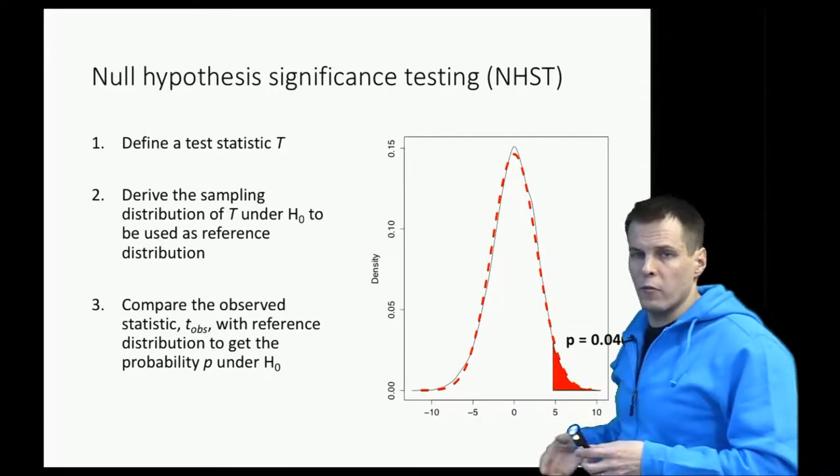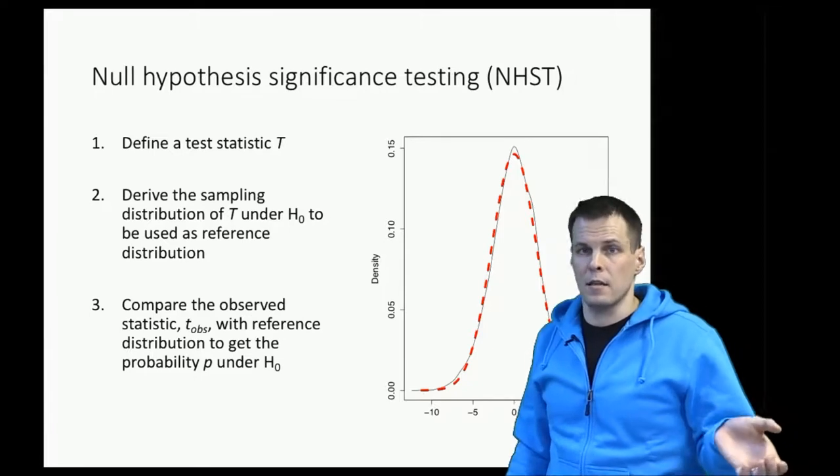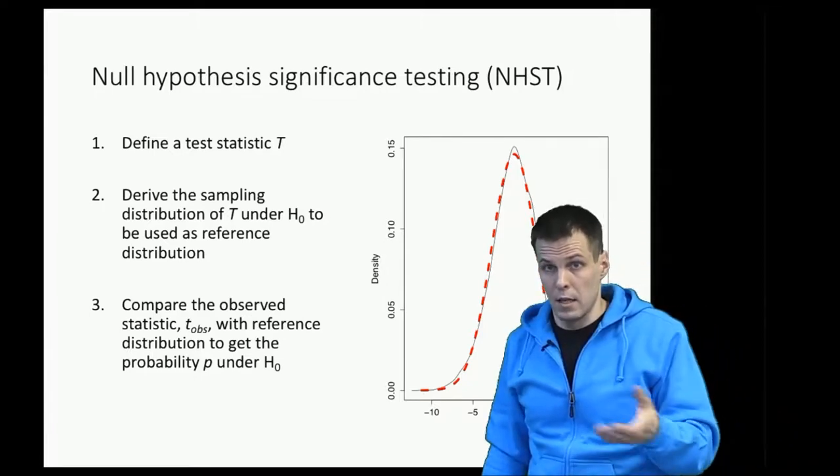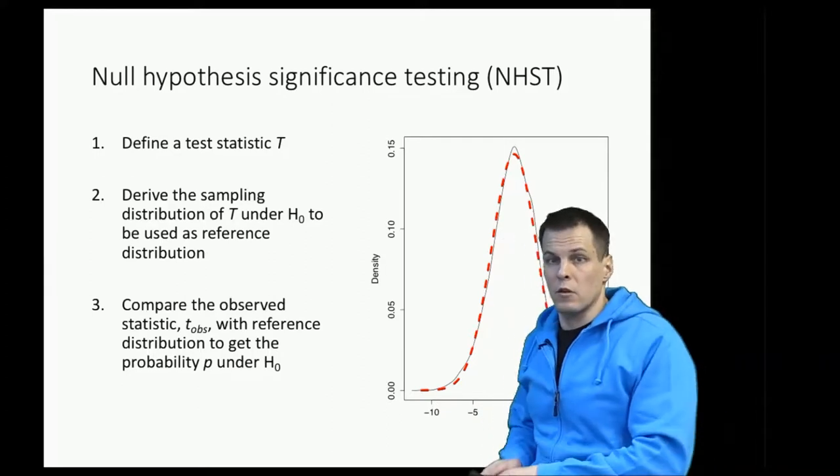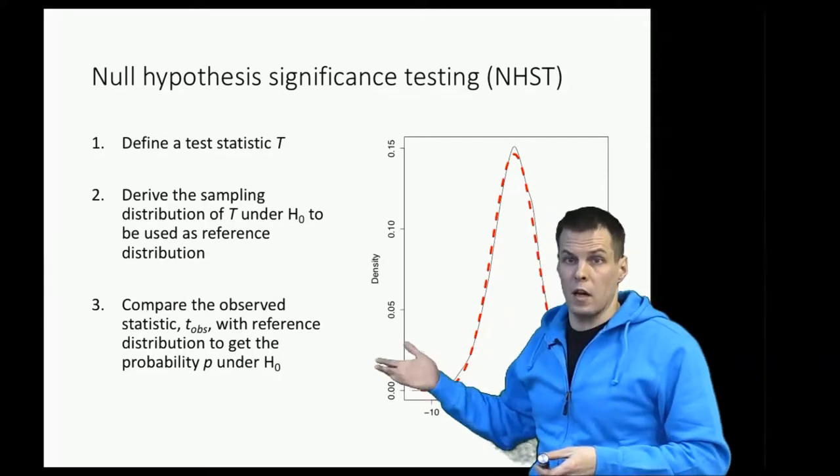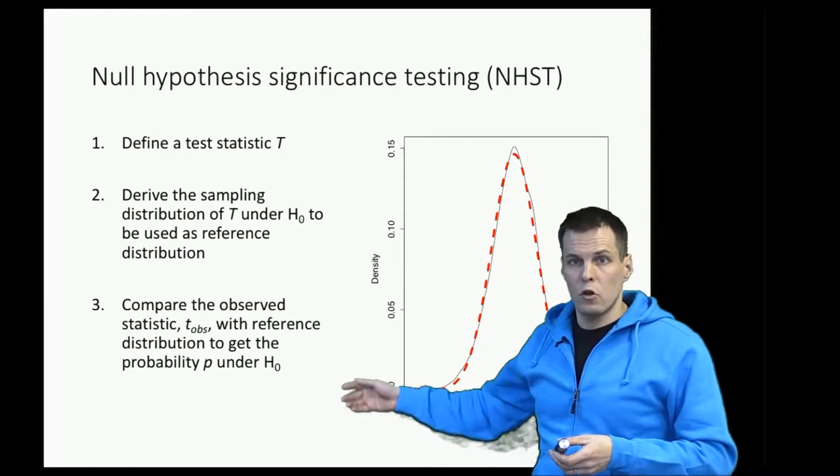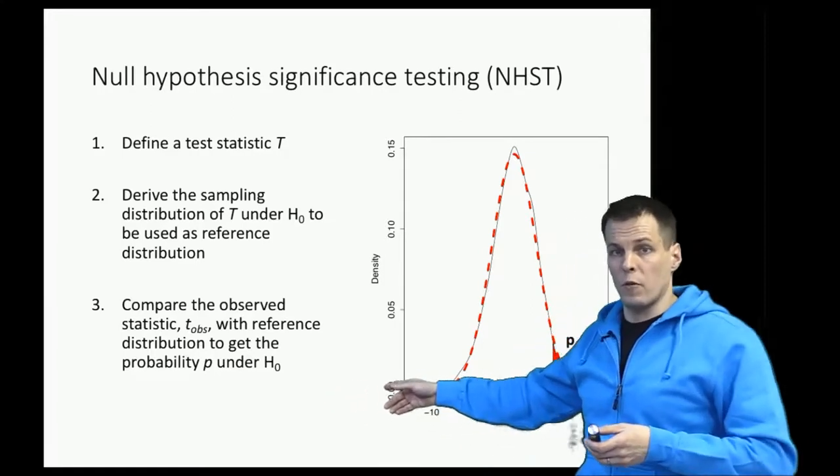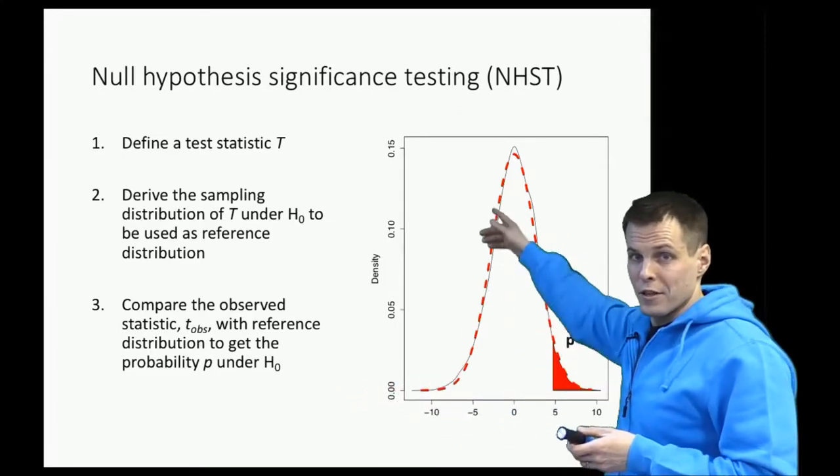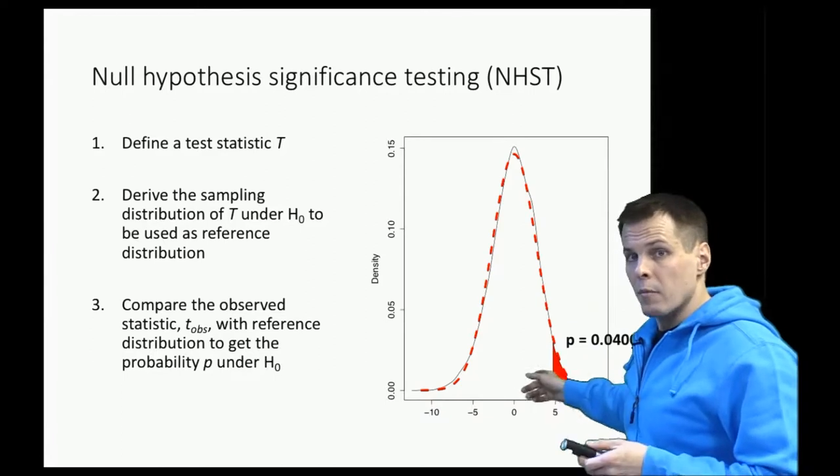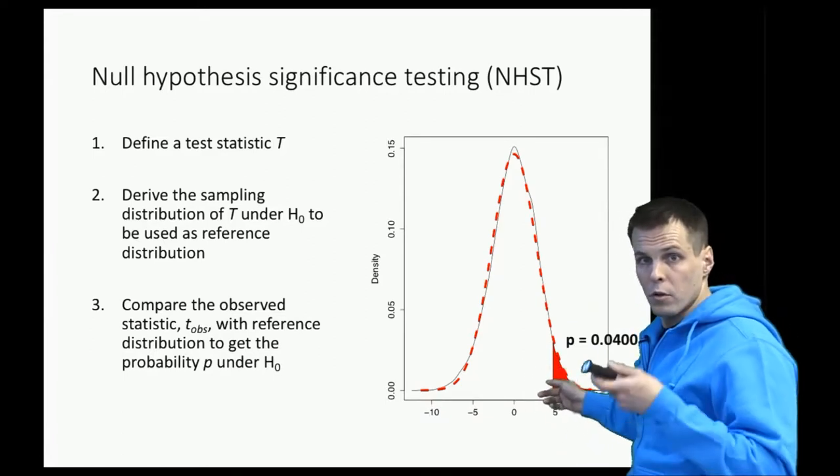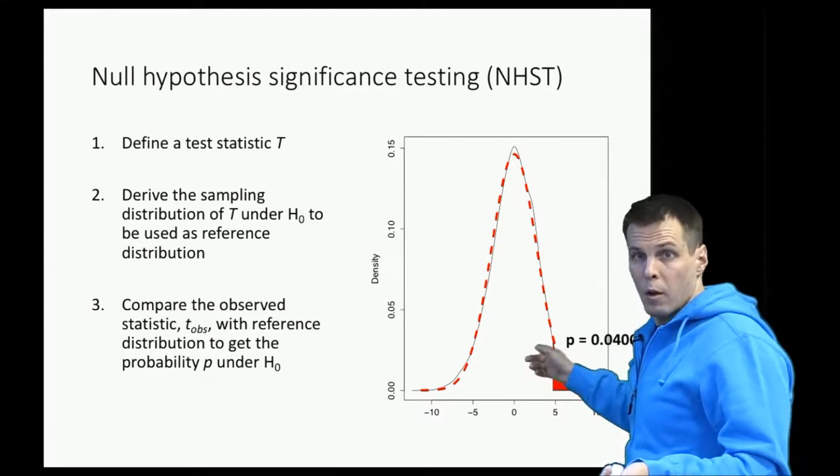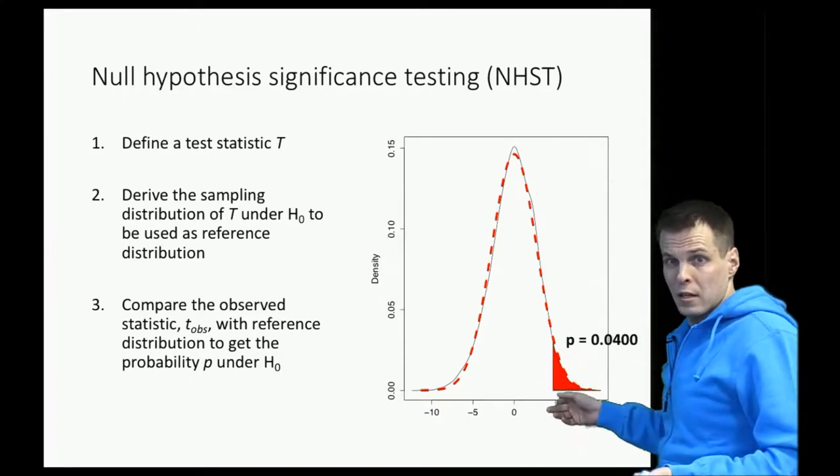It is the probability of obtaining the test statistic under the null hypothesis given our sample size. Then we compare the observed statistic to get the p-value. That's the idea of null hypothesis significance testing. Typically this is done by a computer, so you don't have to draw this normal distribution or calculate the area, but it's useful to understand what's going on under the hood so you know what kind of problems we face when we do this kind of inference.